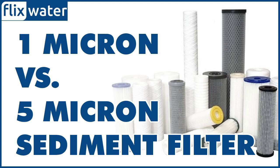Choosing between a 1 and a 5 micron sediment water filter generally comes down to what exactly you want to remove. The difference between the two is very small, and most households should find 5 micron filters sufficient for their needs. In any case, it's often a good idea to start your filtration with a larger filter — like 50 or 100 microns — especially if you are on well water. This will help capture large contaminants and prevent them from making their way to your finer filters and clogging them up quickly.